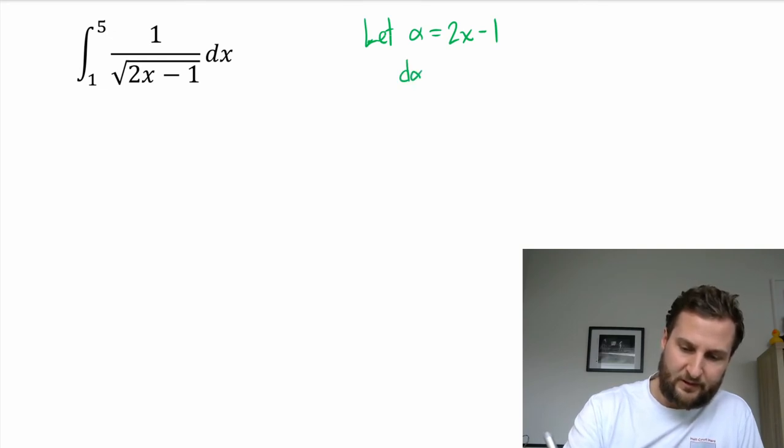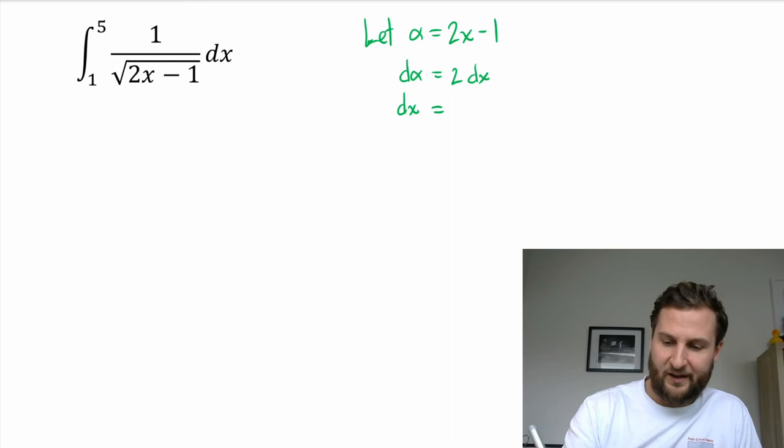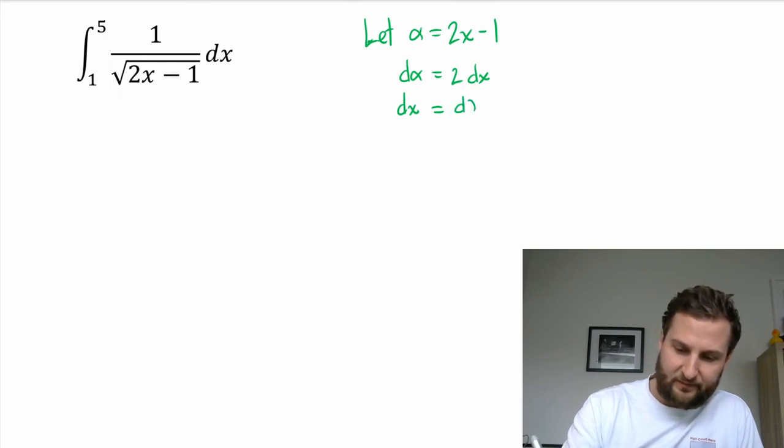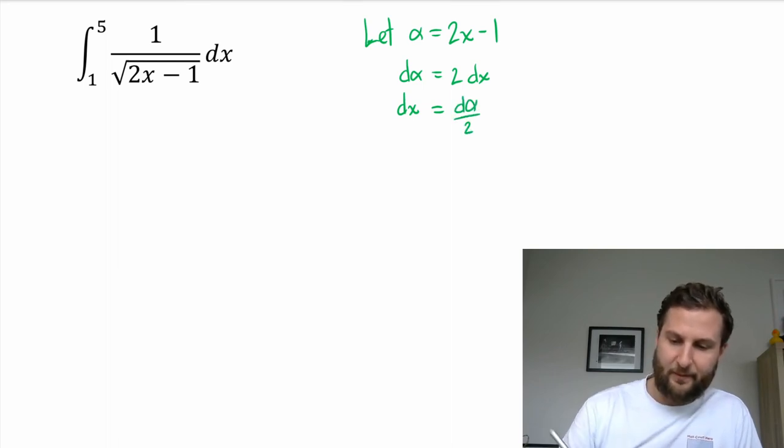So d alpha equals 2 dx, and then dx by itself equals d alpha over 2.